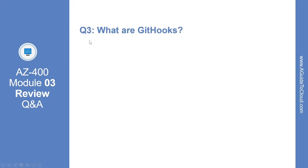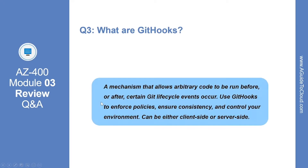Question number 3: what are git hooks? A git hook is a mechanism that allows arbitrary code to be run before or after certain git lifecycle events occur. Use git hooks to enforce policies, ensure consistency, and control your environment. They can be either client-side or server-side.